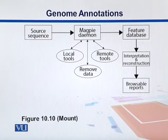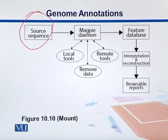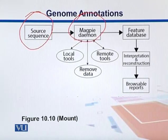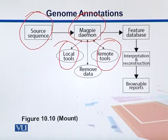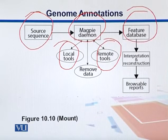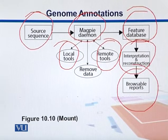Here we have an outline — a kind of workflow showing how MAGPIE works. We take a source sequence and give it to the MAGPIE Daemon, which takes those sequences added to the databases, automatically retrieves them, and sends the data to local and remote tools over the internet. It then explores specific features or annotation patterns and puts them into a feature database, after which the results are interpreted and we get reports. In this way, it is an automated annotation-gathering tool.